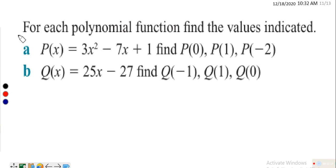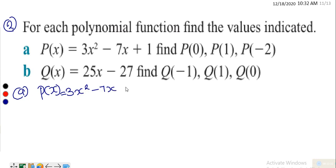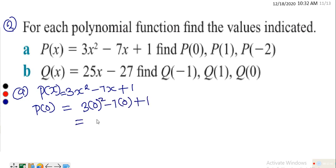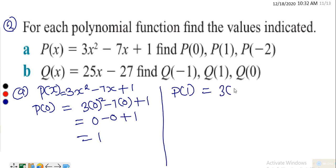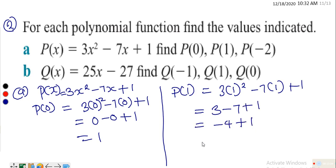For Example 2, find the values indicated. For (a), p(x) = 3x² − 7x + 1. So p(0) = 3(0)² − 7(0) + 1 = 1. Then p(1) = 3(1)² − 7(1) + 1 = 3 − 7 + 1 = −3.